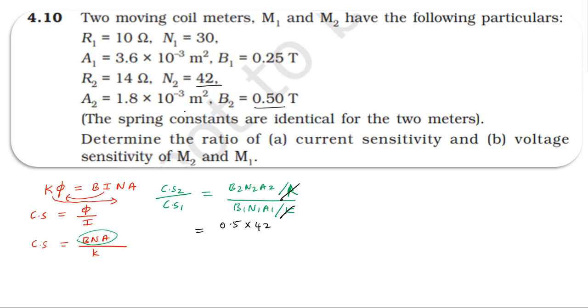For current sensitivity of second coil by first coil: CS2 divided by CS1 equals N2 B2 A2 divided by N1 B1 A1. Substituting values: B2 is 0.5, B1 is 0.25.